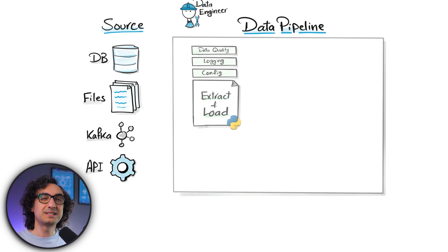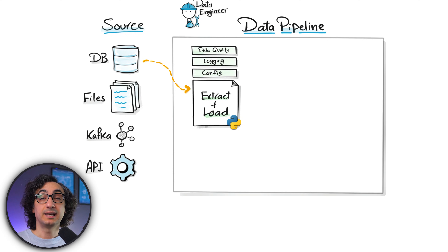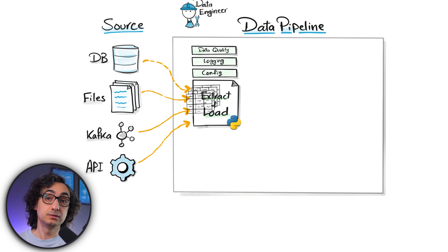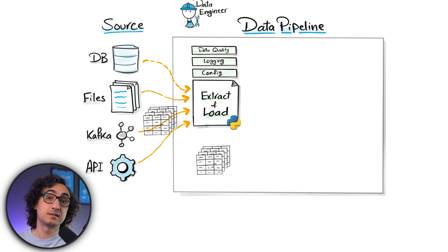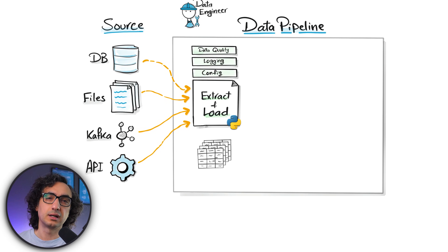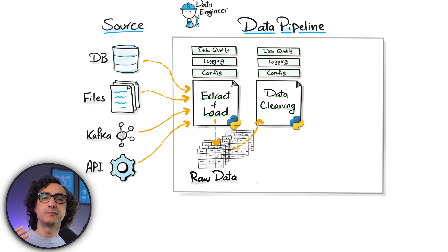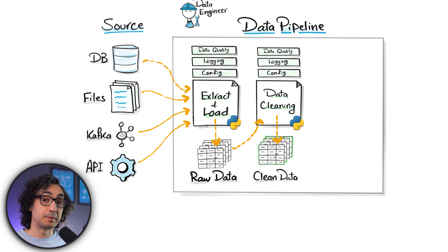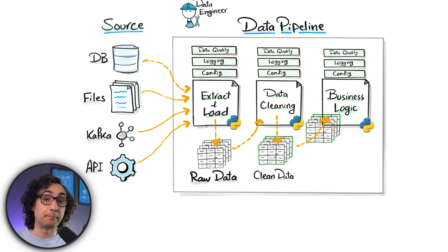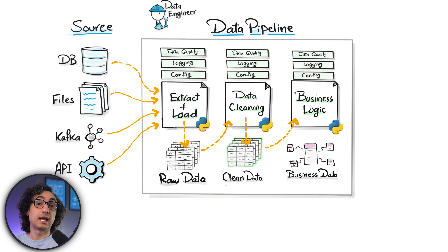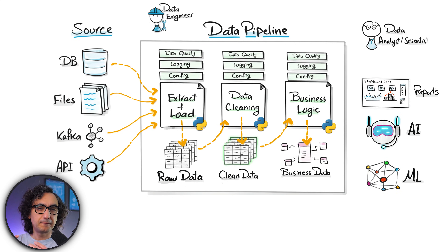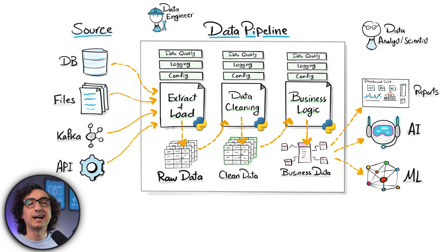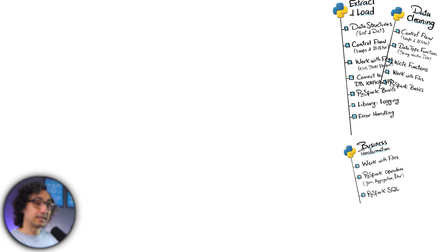That's it — it's over! As data engineers our job is not that hard. We build a data pipeline with three main steps: Step 1 — Extract and Load: bring data from sources into our system without transformations. Step 2 — Clean and Enhance: fix data types, clean text, handle dates, prepare everything. Step 3 — Transform with business logic: join tables, aggregate data, apply rules, and prepare a final product for analytics and AI.